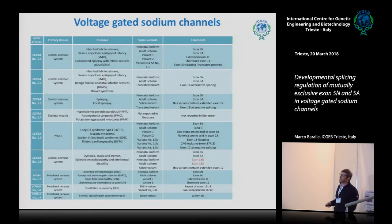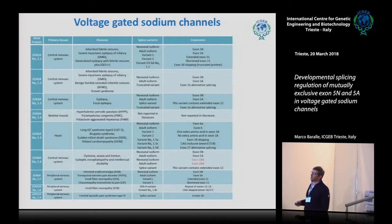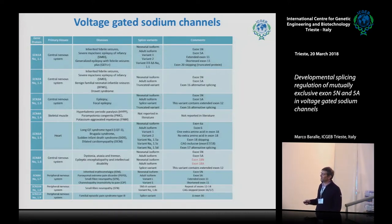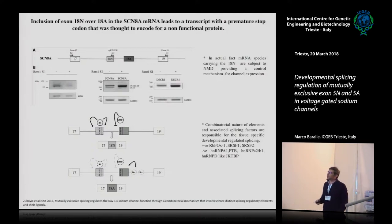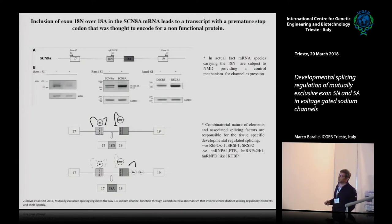The first one I'll briefly mention is exon 18 of the SCN8A gene, which encodes for the NAV1.6 sodium channel. It undergoes alternative splicing of two exons — exon 5 and exon 18. The neonatal form of exon 18 contains a premature termination stop codon. Originally thought to produce a truncated protein, we showed it was actually resulting in nonsense-mediated decay. We then mapped the whole series of cis and trans-acting factors responsible for the inclusion of exon 18N or exclusion of 18A.